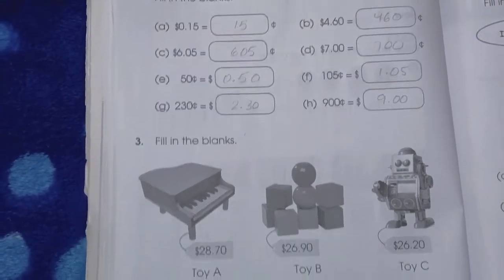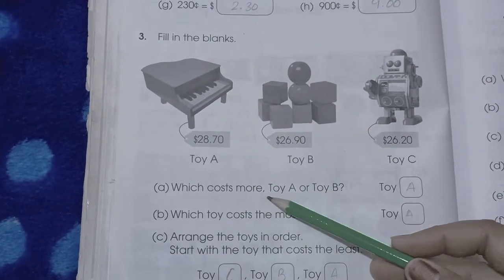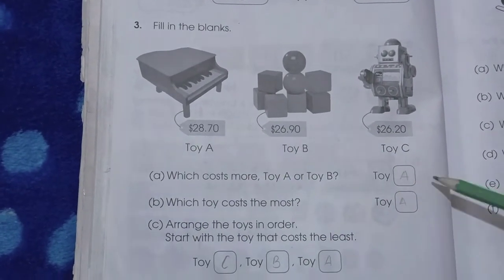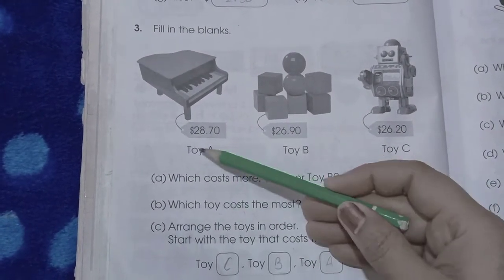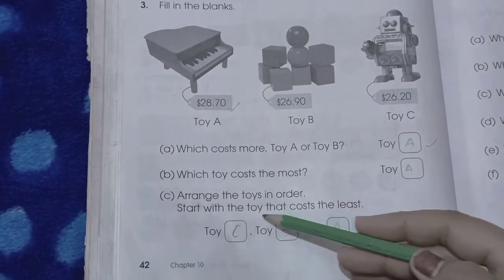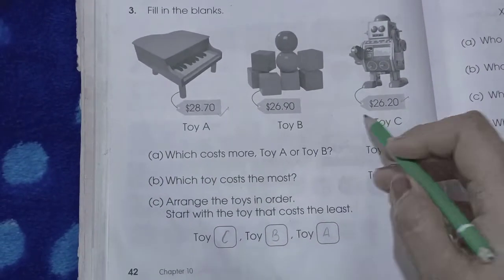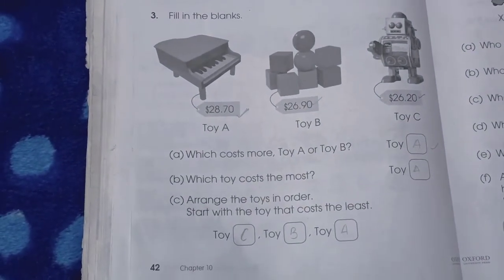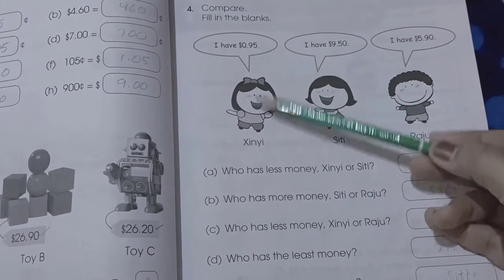Now here we fill in the blanks. Which costs more, toy A or toy B? A is 28, B is 26, so toy A costs more. Which toy costs the most? Toy A costs the most. Arrange the toys in order starting with the toy that costs least. So toy C, then B, then A.